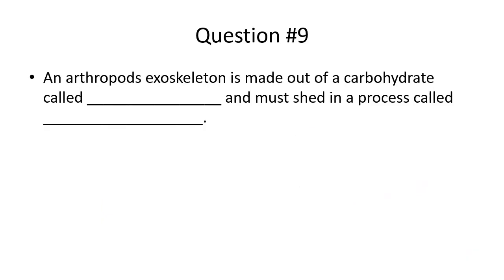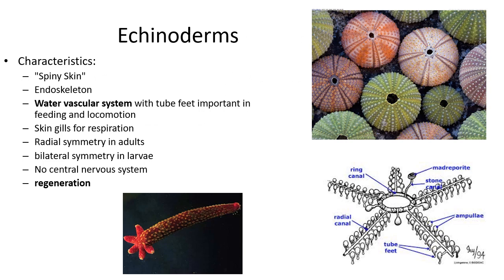An arthropod's exoskeleton is made out of a carbohydrate called chitin. It must be shed in a process called molting. Echinoderms — sea stars and sea urchins — have spiny skin, which is literally what echinoderm means, and their skeleton is on the inside of their body, meaning they have an endoskeleton.